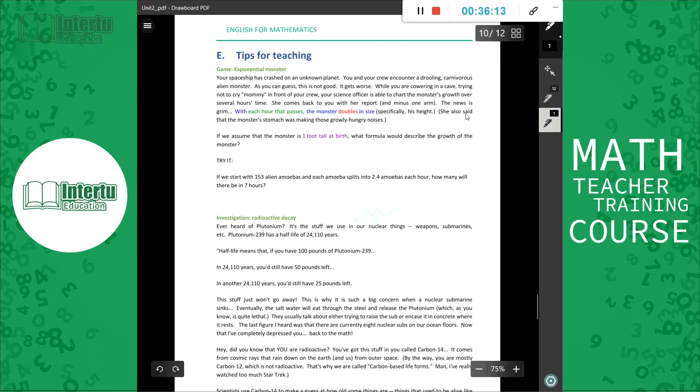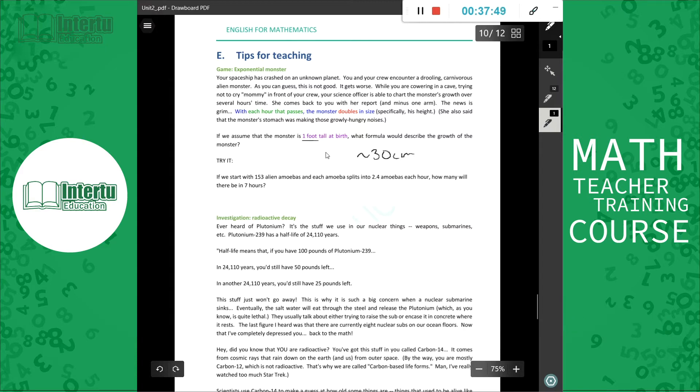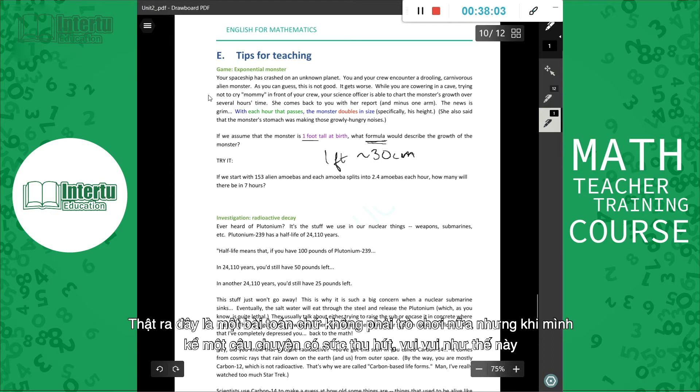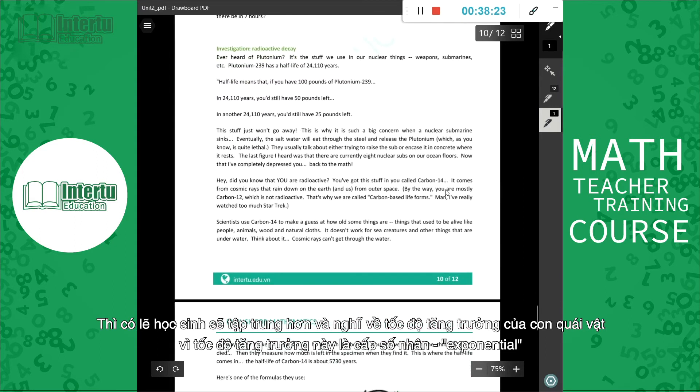[Vietnamese: So the question is, if this monster starts at only 1 foot tall - 1 foot is a US unit of measurement, 1 foot is about 30cm if I'm not mistaken - then how do we calculate the formula to calculate the growth of this monster?] This is actually a math problem, not a game, but when we tell it as a story that's engaging and fun like this, perhaps students will be able to concentrate more and think about the monster's growth rate, because this growth rate is exponential, right?